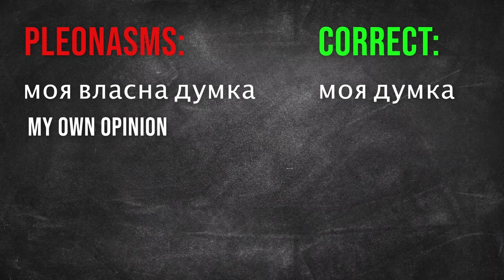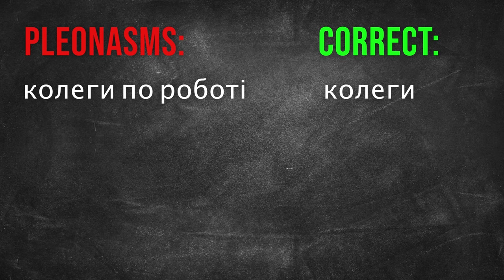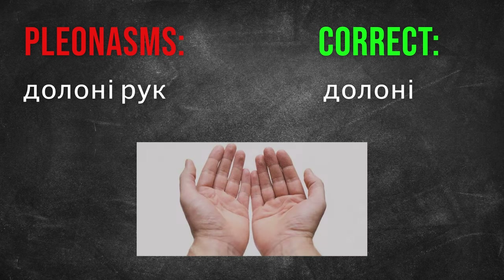More examples of pleonasms: «Моя власна думка» — my own opinion. Just say «Моя думка» — my opinion. For example: «На мою думку, українська мова є дуже красивою.» Also: «Колеги по роботі» — colleagues from work — just say «Колеги». And «Долоні рук» — palms of hands — just say «Долоні».